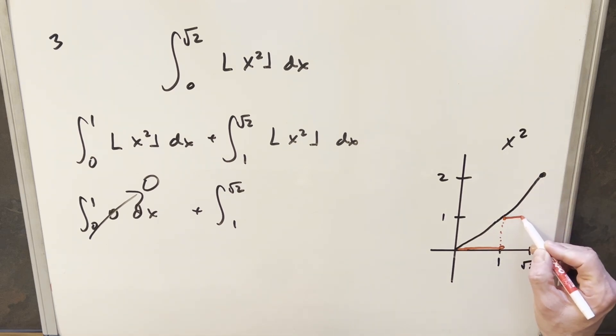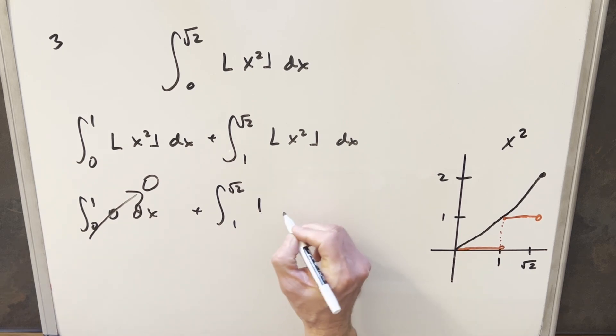But for all these other points, everything's going to be rounded down to 1. But again, this endpoint doesn't matter, so everything in this area is just going to evaluate to 1. So over here, we're just integrating 1 dx.